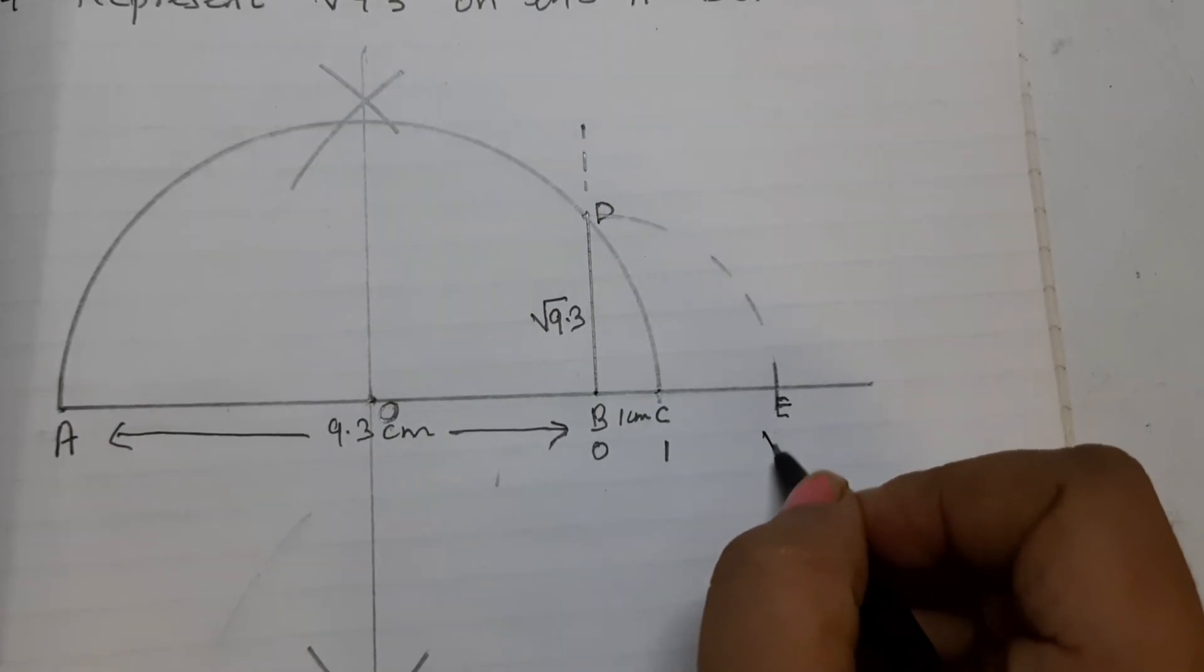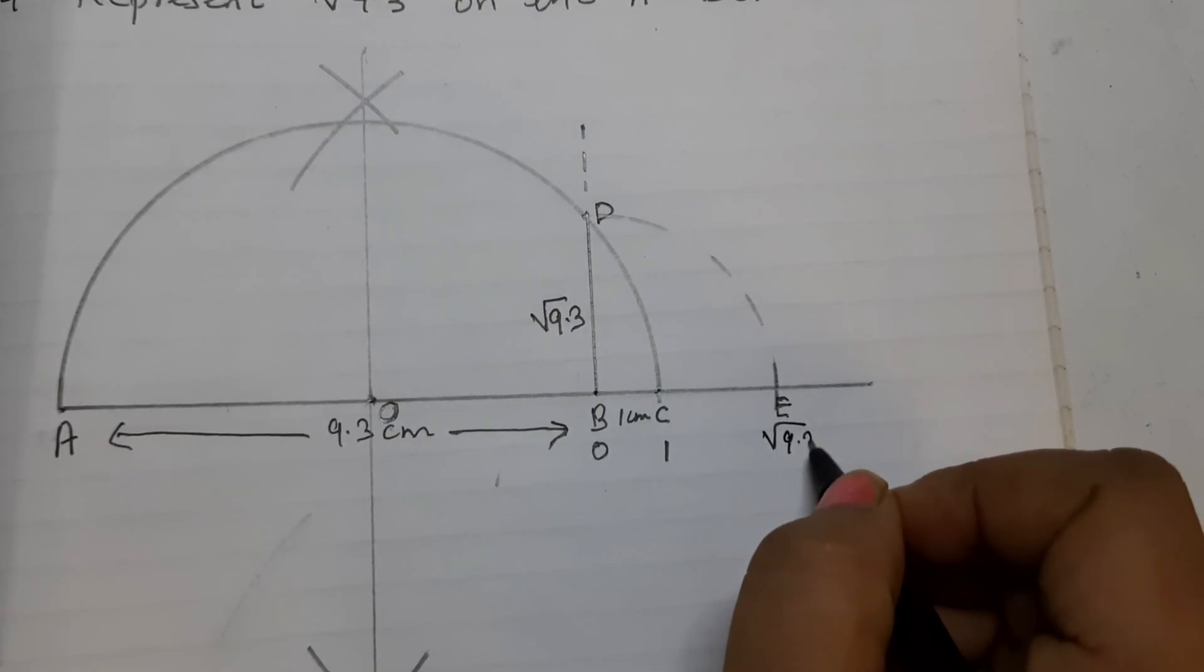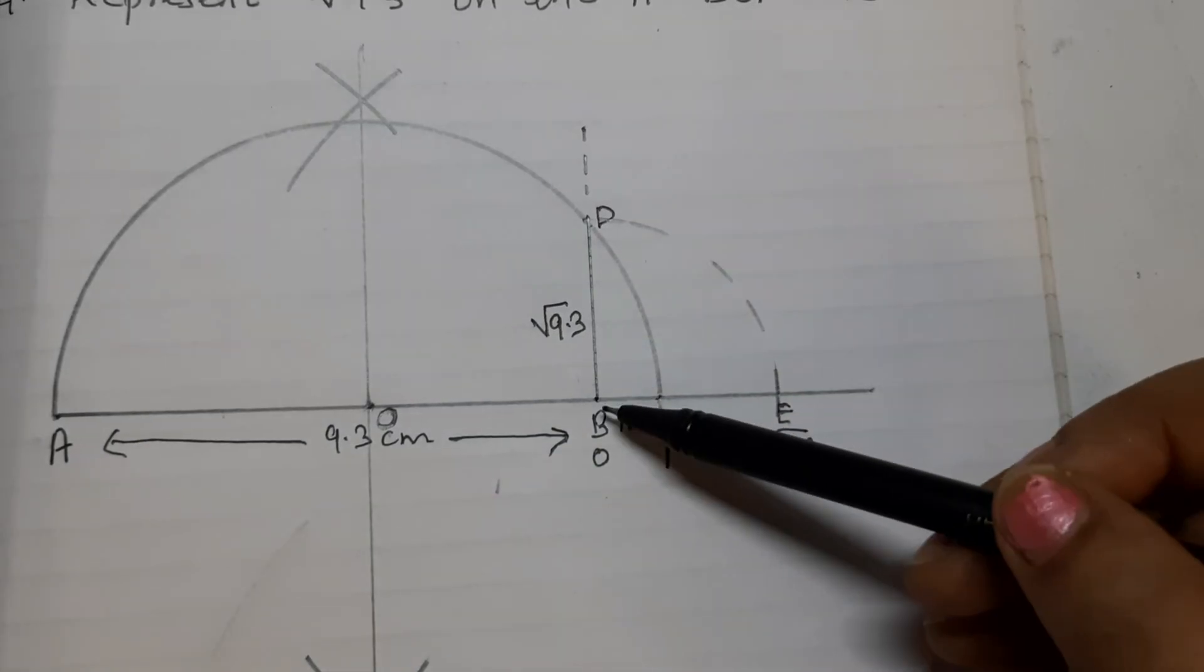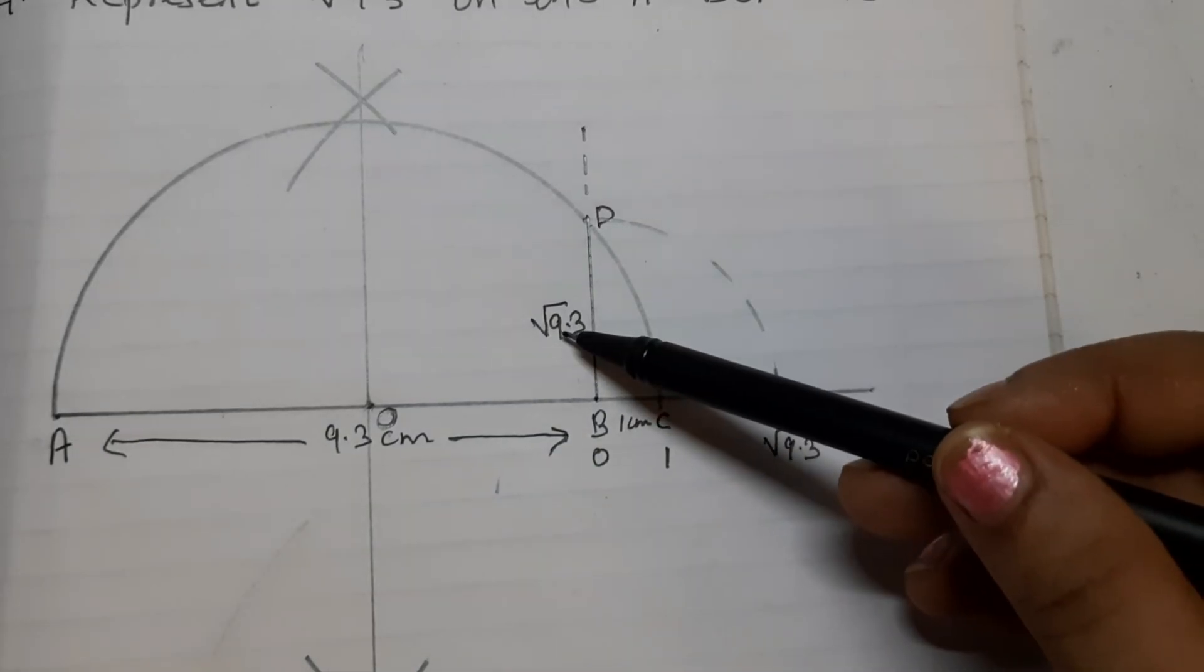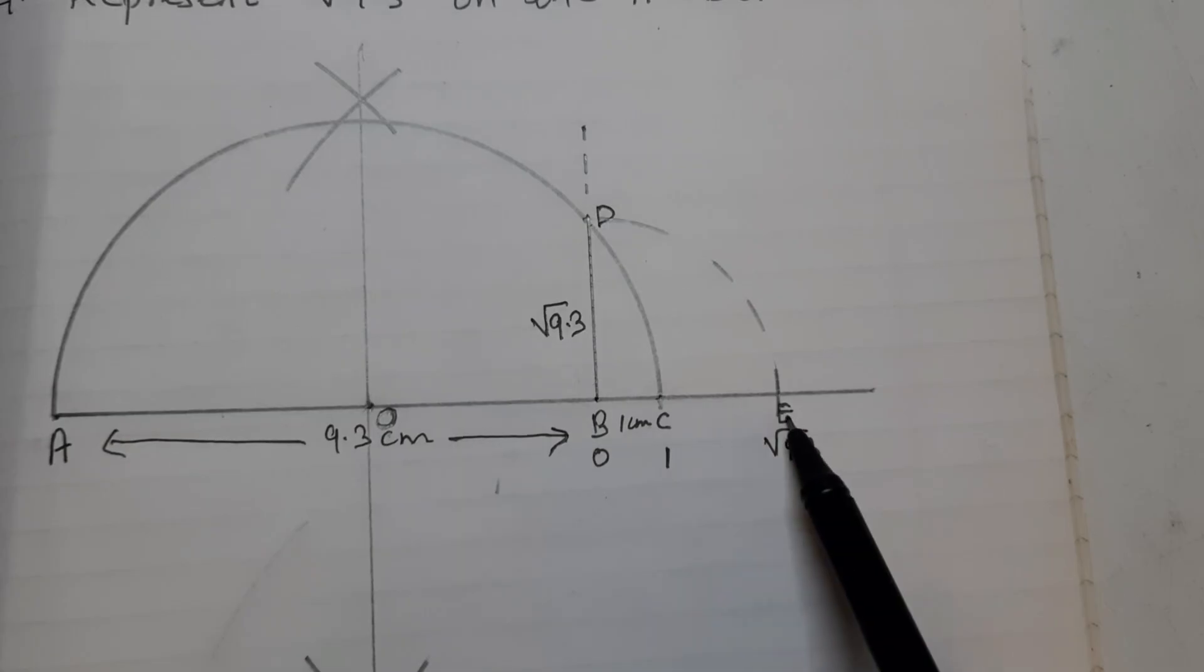E represents square root of 9.3. Because we are taking BD as the radius which is root of 9.3, so length of BE is also root of 9.3.